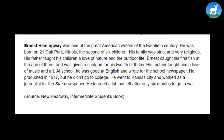Let us now start by reading a sample biography. Let's look at the first biography of an American writer named Ernest Hemingway. Ernest Hemingway was one of the great American writers of the 20th century. He was born on 21 July in Oak Park, Illinois, the second of six children. His family was strict and very religious. His father taught his children a love of nature and the outdoor life. Ernest caught his first fish at the age of three and was given a shotgun for his 12th birthday. His mother taught him a love of music and art. At school he was good at English and wrote for the school newspaper. He graduated in 1917 but he didn't go to college. He went to Kansas City and worked as a journalist for the Star newspaper. He learned a lot but left only after six months to go to war.